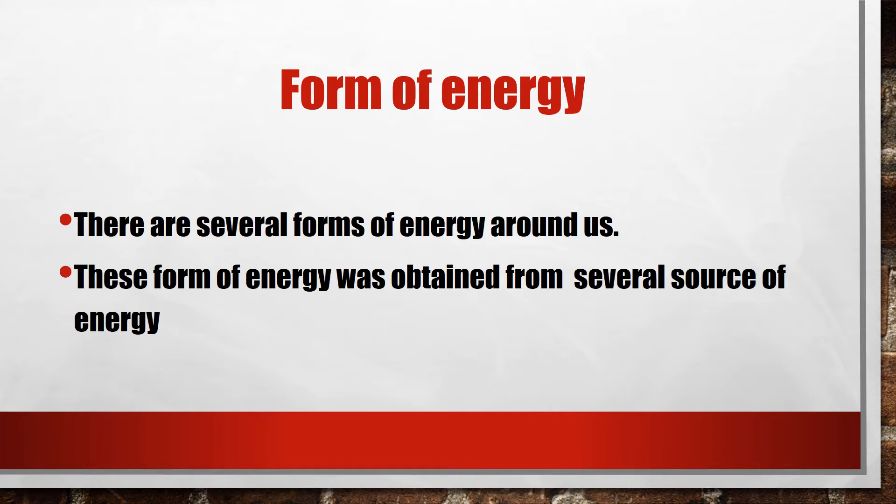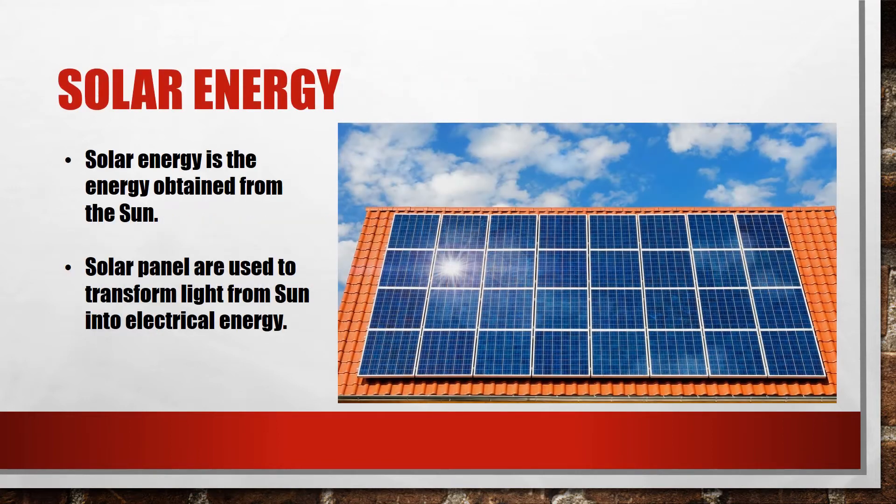There are several forms of energy around us. This form of energy was obtained from several sources of energy. Solar energy is the energy obtained from the sun. Solar panels are used to transform light from the sun into electrical energy.